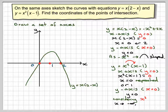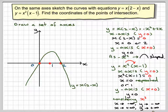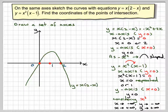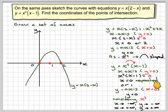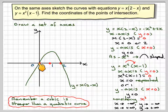Considering the x³ term: as x goes to minus infinity, minus infinity cubed is negative, so y goes to minus infinity — the curve starts down here. When x is plus infinity, y is plus infinity, so the curve ends up over here. The point at x = 0 is therefore a local maximum because it's a repeated root. A cubic is generally steeper than a quadratic except between 0 and 1, so we have to be careful — between 0 and 1 the cubic sits just underneath.